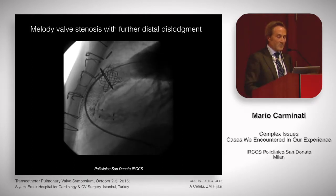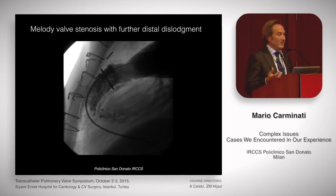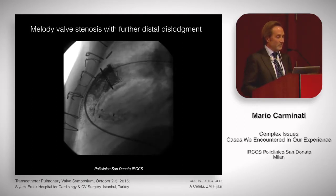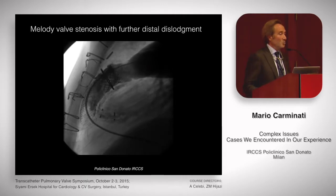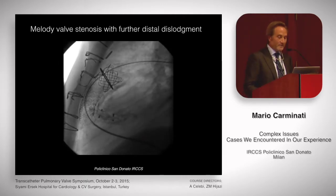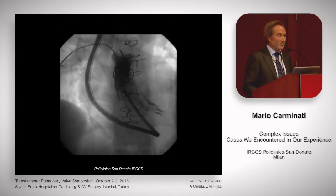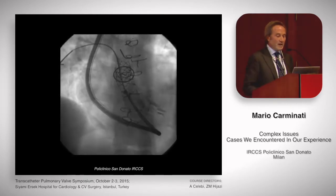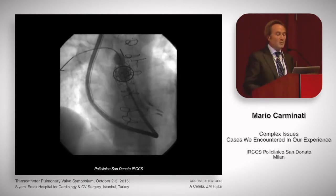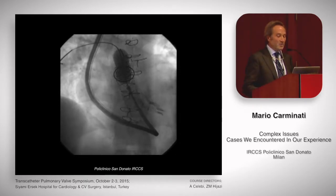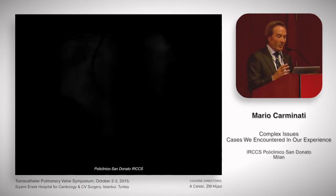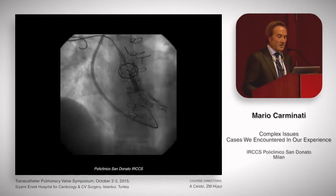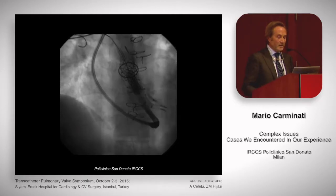The VSD was okay with the two devices there, but still severe stenosis of the right ventricular outflow tract. So we attempted to put a second valve there. It was very, very difficult or impossible from the femoral vein, so we switched to right internal jugular vein approach. It was also very difficult. But eventually I could get a stent across the previously implanted Melody and implanted a second Melody valve.